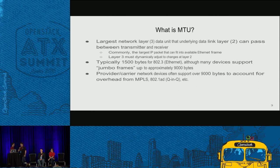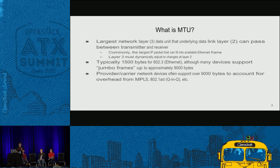A quick recap: a Maximum Transmission Unit is the largest network layer-three data unit that the underlying data link layer can pass between a transmitter and receiver. The common standard is 1500 bytes for Ethernet. However, many devices actually support larger frames, commonly called jumbo frames.